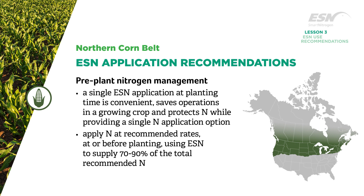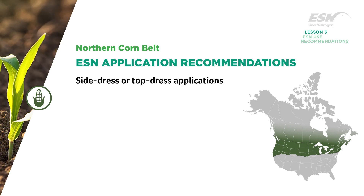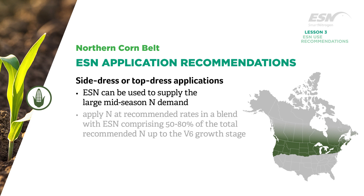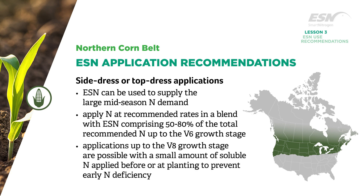For side dress or top dress applications in northern geographies, ESN can be used to supply the large mid-season N demand of corn. Apply N at recommended rates in a blend with ESN comprising 50 to 80 percent of the total recommended N up to the V6 growth stage. Applications up to the V8 growth stage are possible with a small amount of soluble N applied before or at planting to prevent early N deficiency.